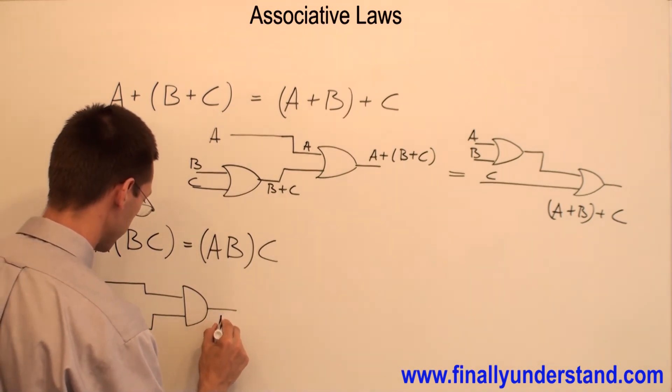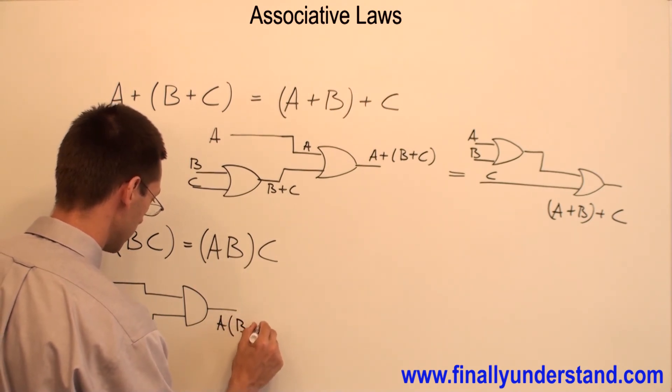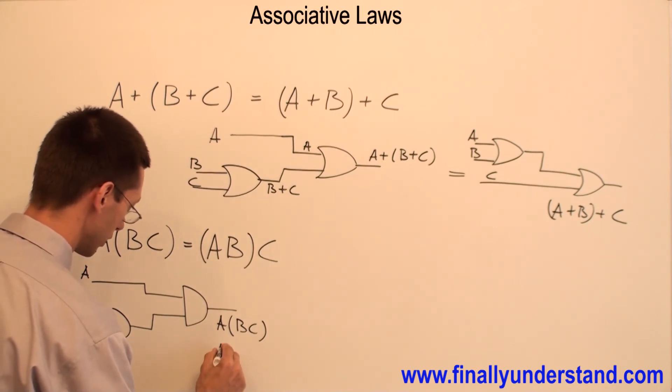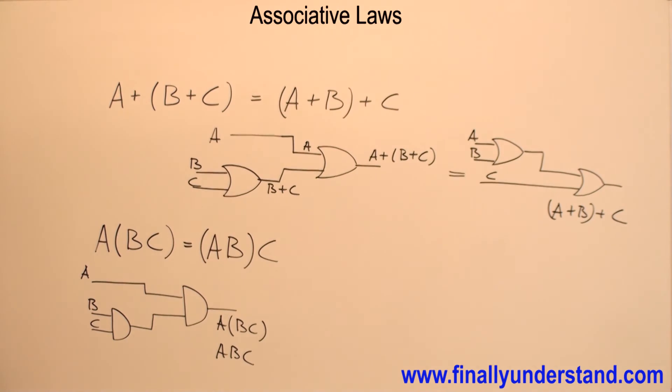So the answer is going to be A AND B AND C. Because this is the product, this is nothing else, just A AND B AND C. This is three input AND gate, we can say.